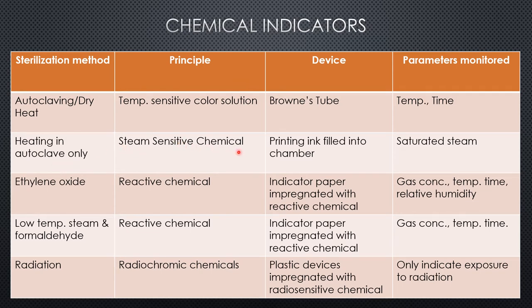For autoclave sterilization, an organic chemical in a printing ink is filled into a chamber or a carrier material. A combination of moisture and heat causes darkening of the ink, which serves as the indicator for sterilization. The parameter monitored here is saturated steam.